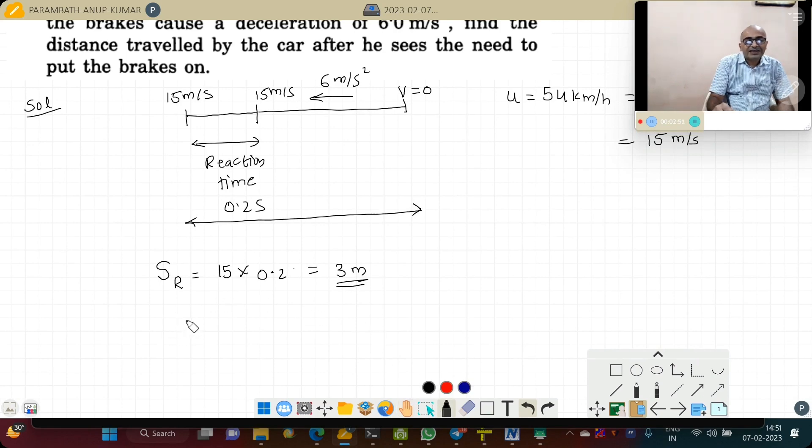We can say that it is having a uniform deceleration of 6 m per second square. We can apply v square minus u square is equal to 2as. Final velocity 0, 0 square minus initial velocity 15 square is equal to 2 into acceleration.